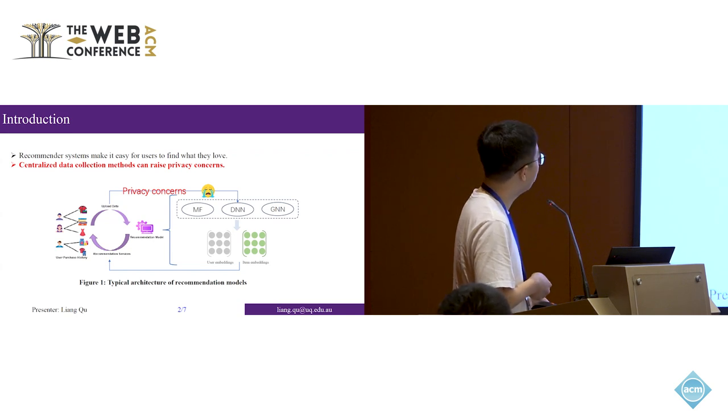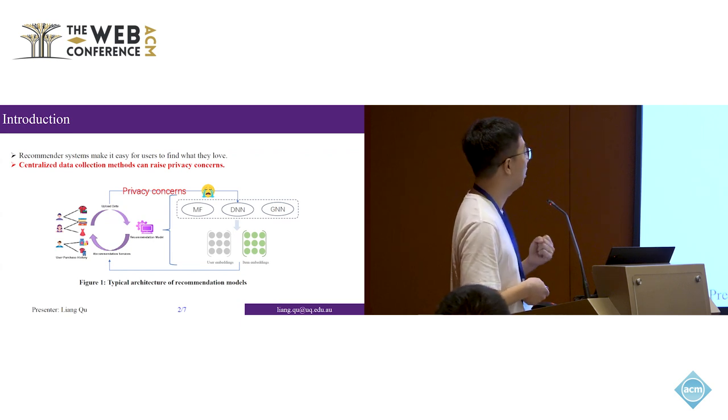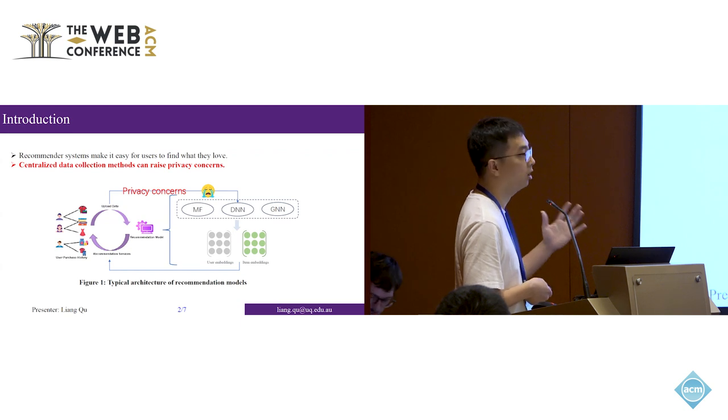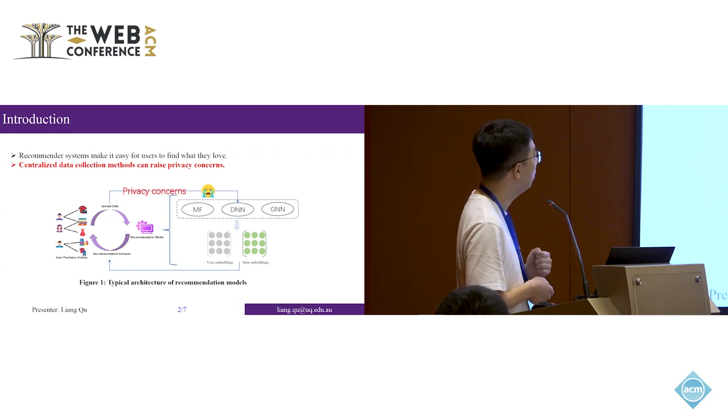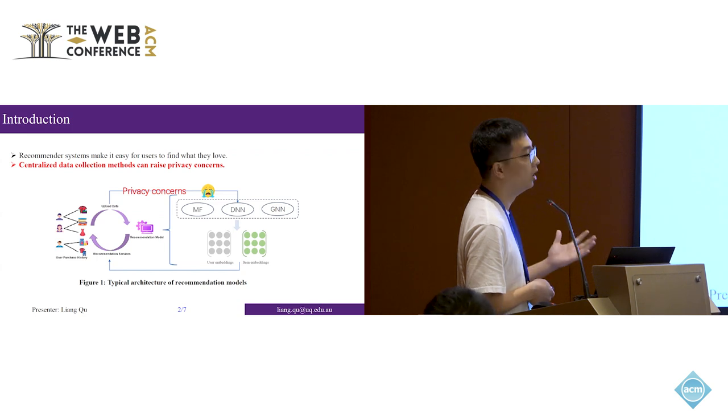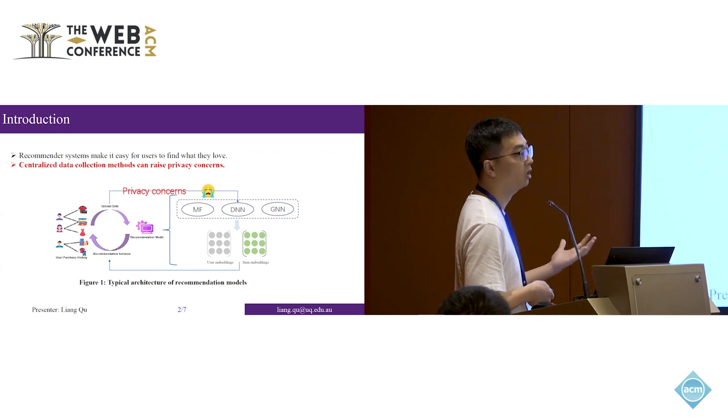All of this data is uploaded to the cloud server. The cloud server trains a recommendation model to capture the user's preferences. Typical techniques in recommendation models consist of three categories: from the earlier matrix factorization, to deep neural networks, to recent years, graph neural networks, because it achieves state-of-the-art performance.